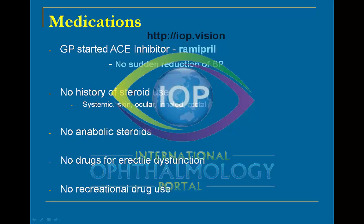His GP had started an ACE inhibitor, ramipril, and from the documentation available there had been no sudden reduction of blood pressure. There was no history of steroid use in any form — either systemic, skin, ocular, inhaled, or rectal for hemorrhoids.